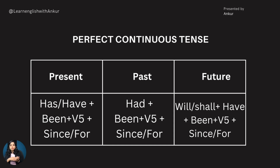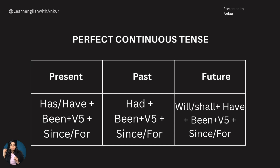The verb's fifth form is basically the verb's first form plus -ing. What you have to remember is: verb's first form plus -ing is used in perfect continuous tense. In perfect tense the verb's third form is used, but in perfect continuous, has or have plus been plus verb's first form plus -ing is the structure.